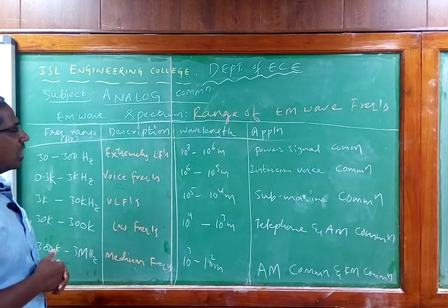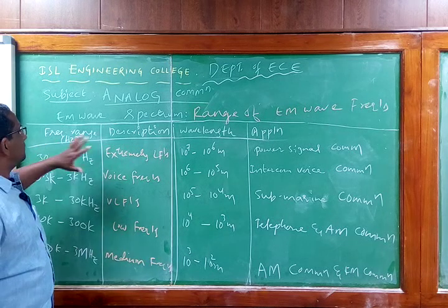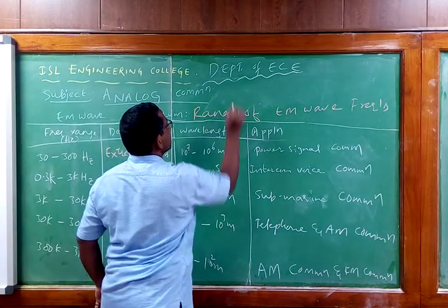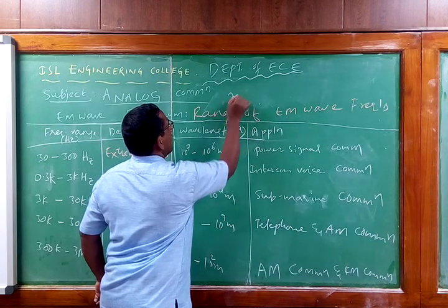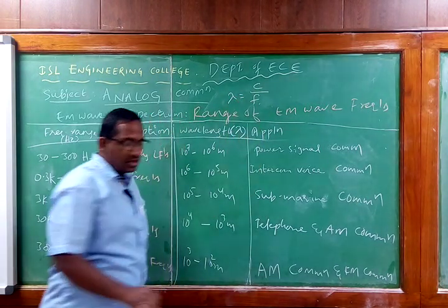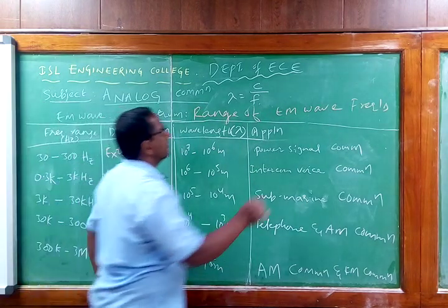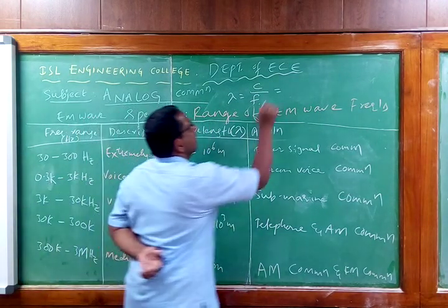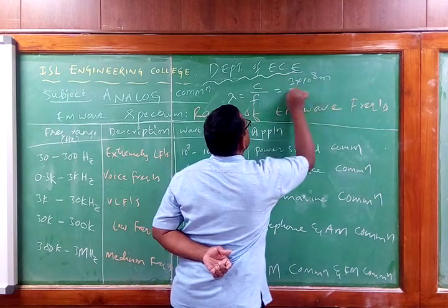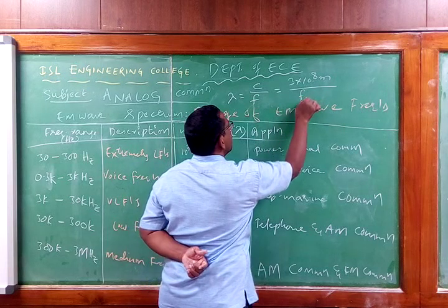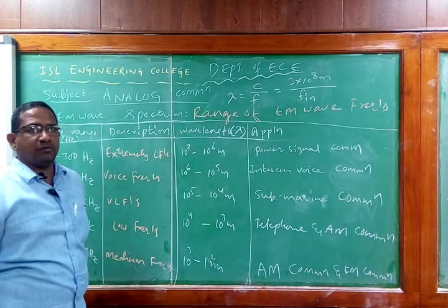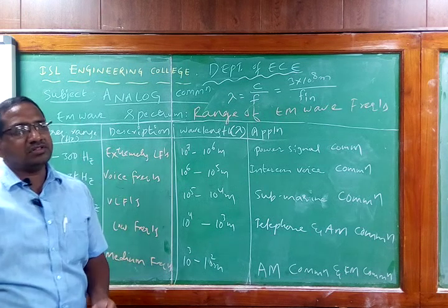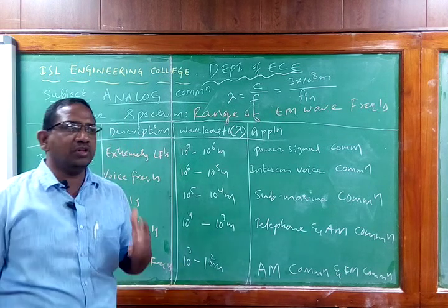One important term to understand is wavelength, represented by the symbol lambda. The formula is λ = C / F, where C is the velocity of light in free space, equal to 3 × 10⁸ meters per second, and F is the input signal frequency. A signal is basically electrical terminology, while a wave is the signal radiated by an antenna — the form changes but they are essentially the same.